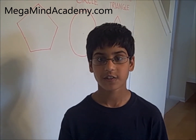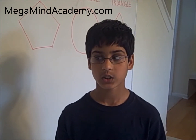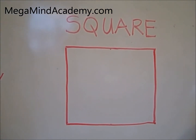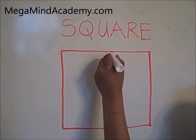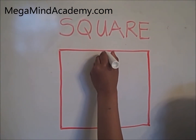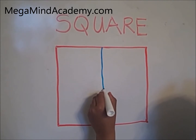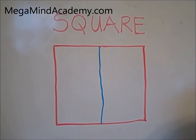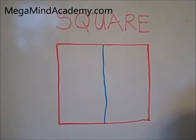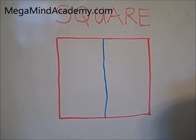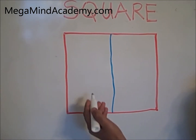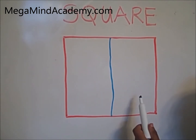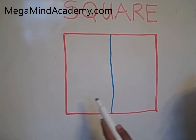The first figure is a square. This is a line of symmetry — it is one of the lines of symmetry. It divides the square in half, into two equal halves.